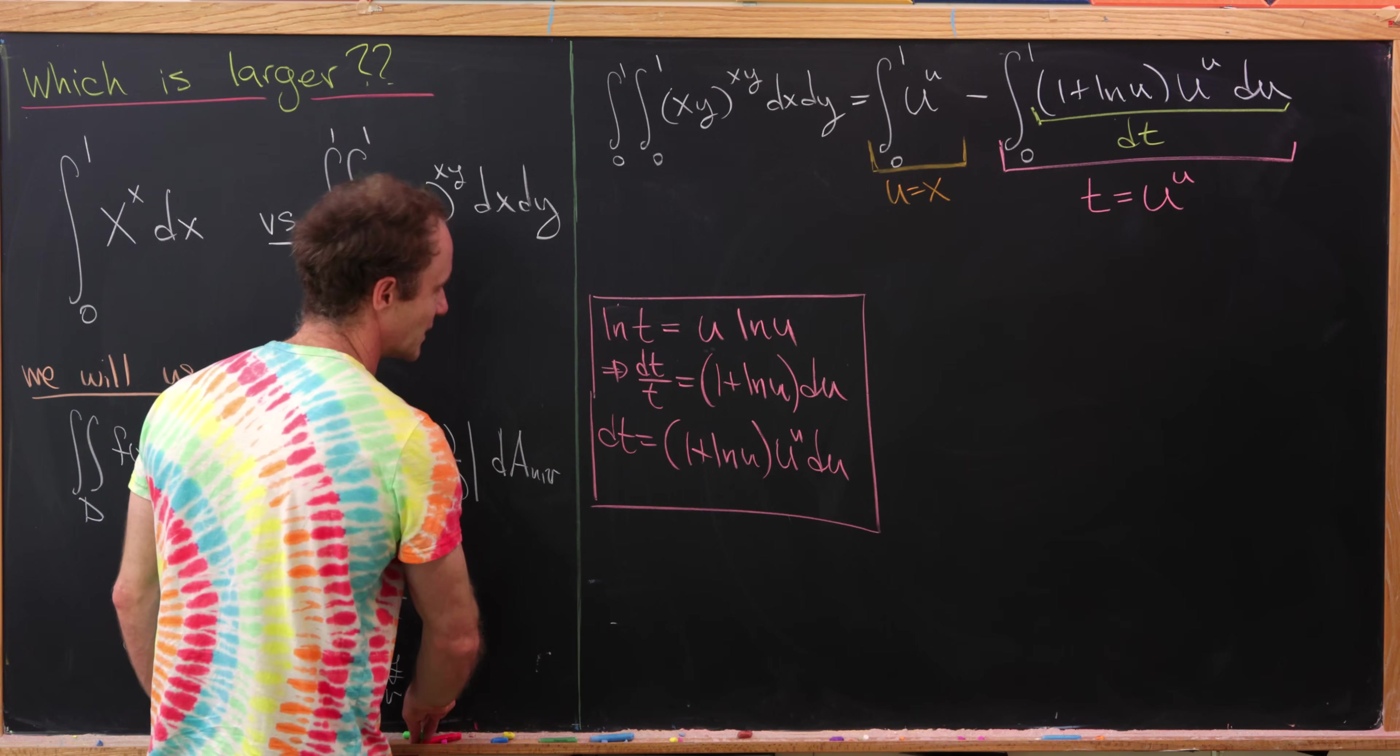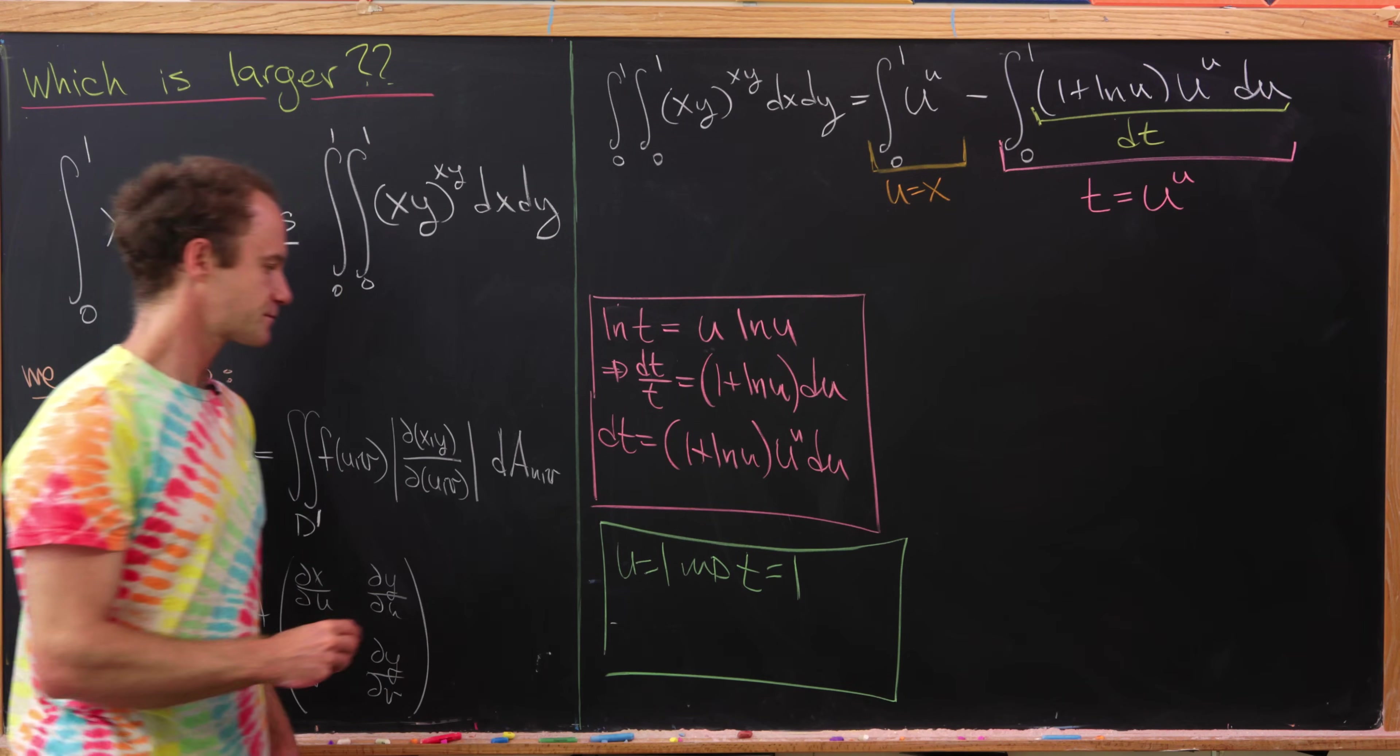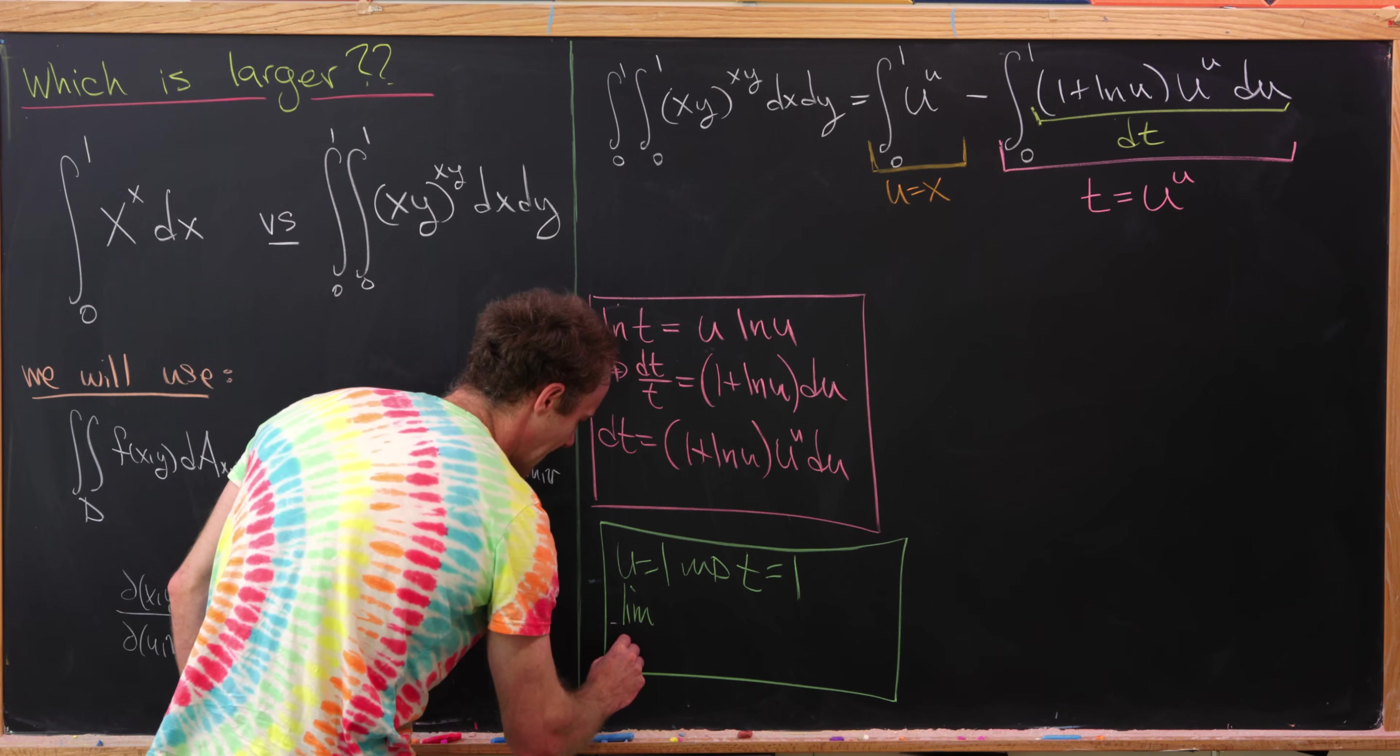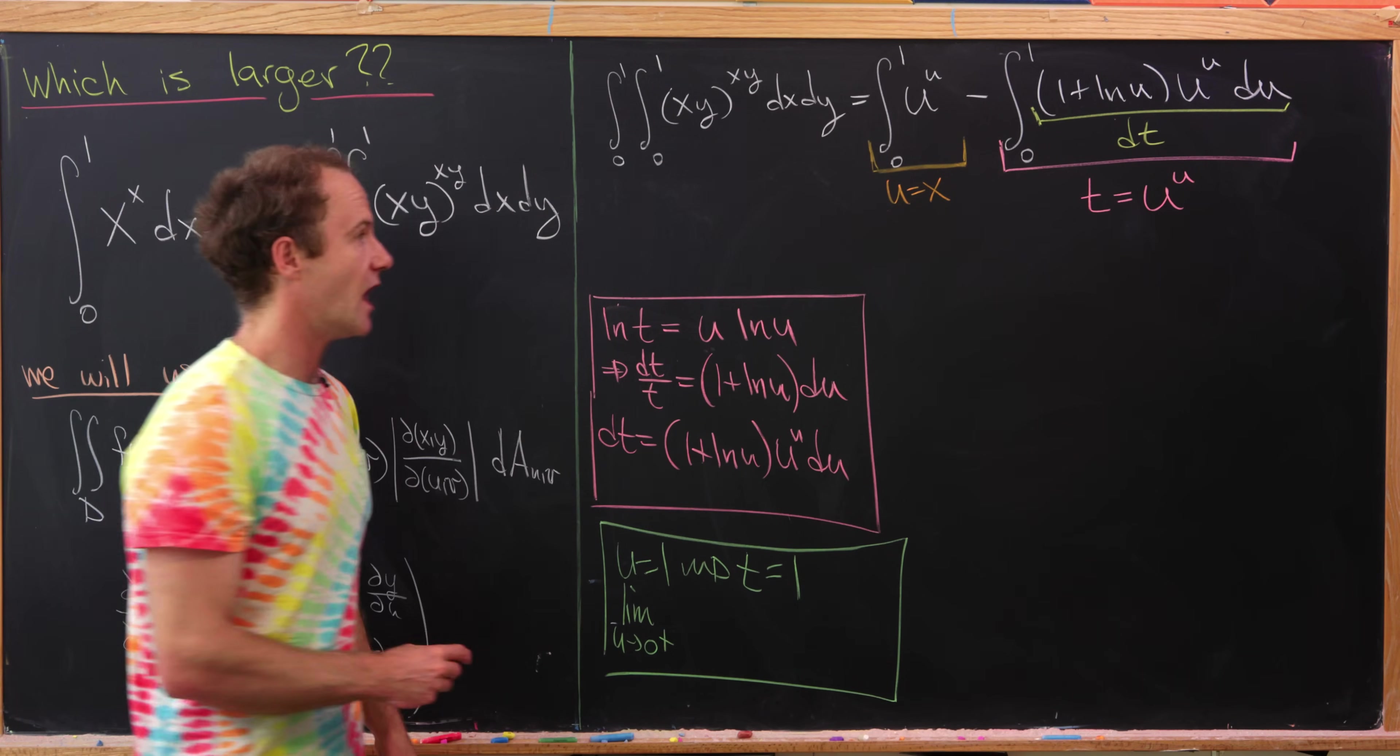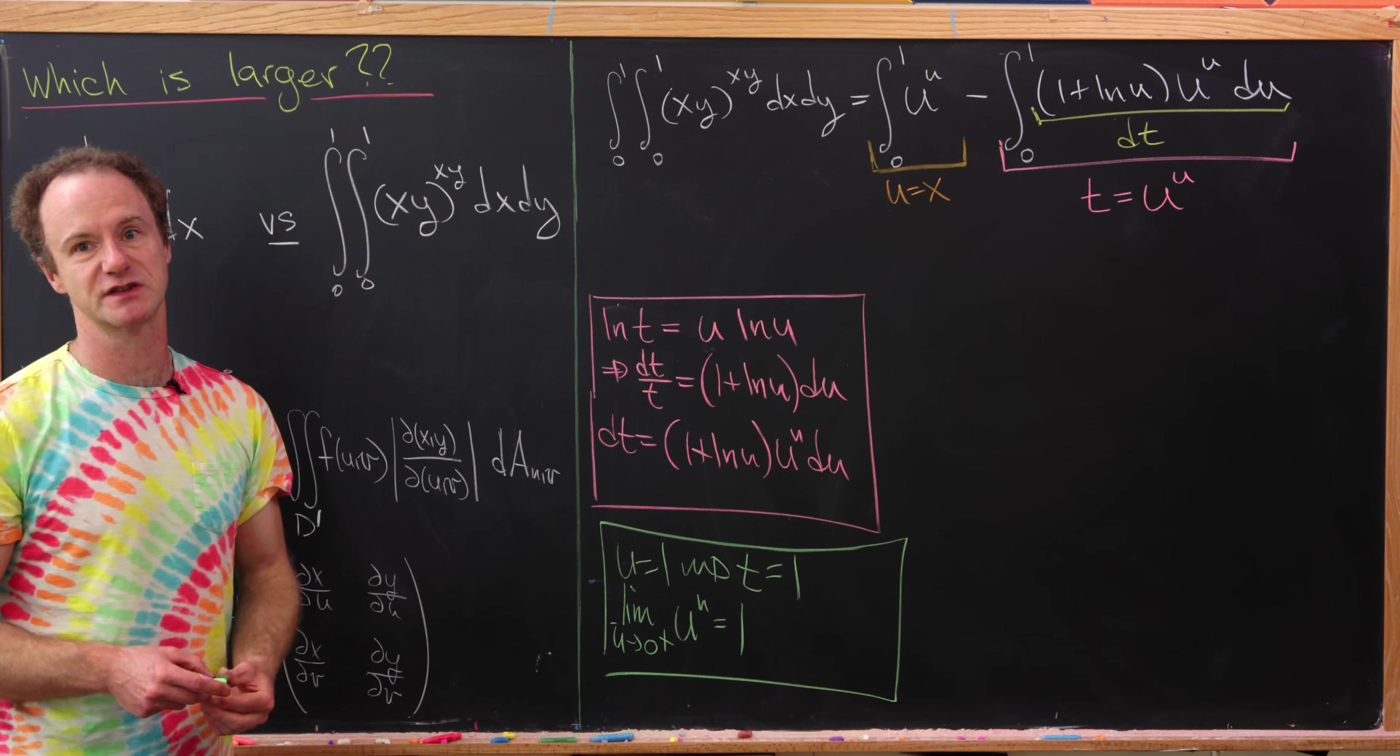So if we make the substitution where t is equal to u to the u, then our whole integrand here is simply dt. But then we need to figure out what's happening with the bounds of integration. Maybe I won't go through all of the details, but notice when u is equal to 1, that means that t is equal to 1 because 1 to the 1 is 1. But then u equals 0 gives us an indeterminate form. We have something of the form 0 to the 0. But that means we need to look at the limit as u goes to 0 from above. You might say, why from above? Well, that's the region of integration that we're in of u to the u. And you'll see that you get 1. You can do that with a standard logarithmic trick, pretty similar to what we did over here. You might want to use L'Hopital's rule. So notice this means that both bounds of integration will give us 1.